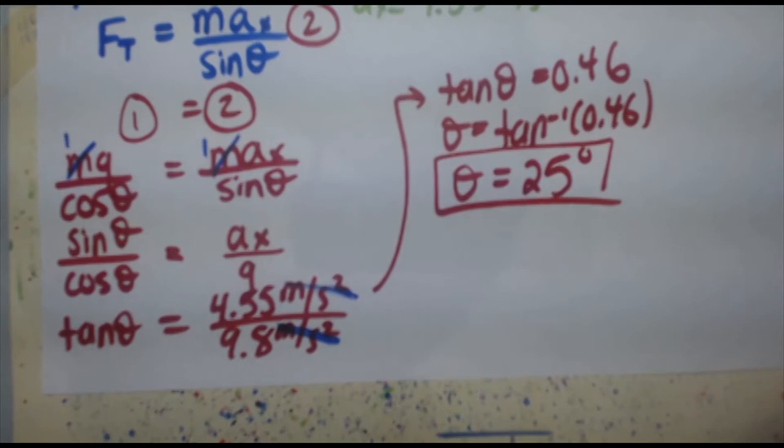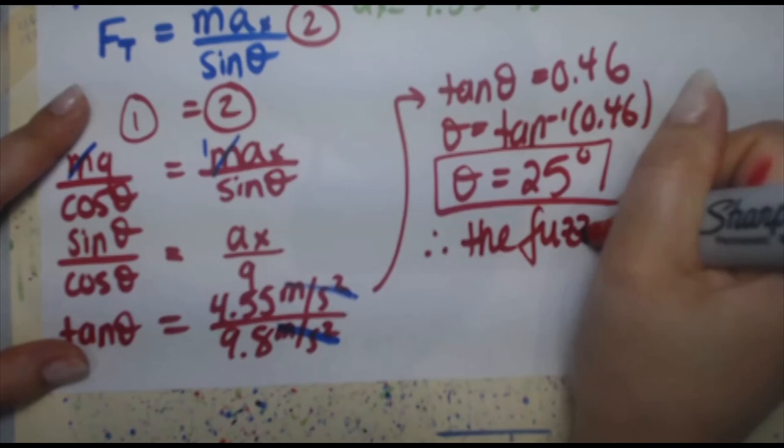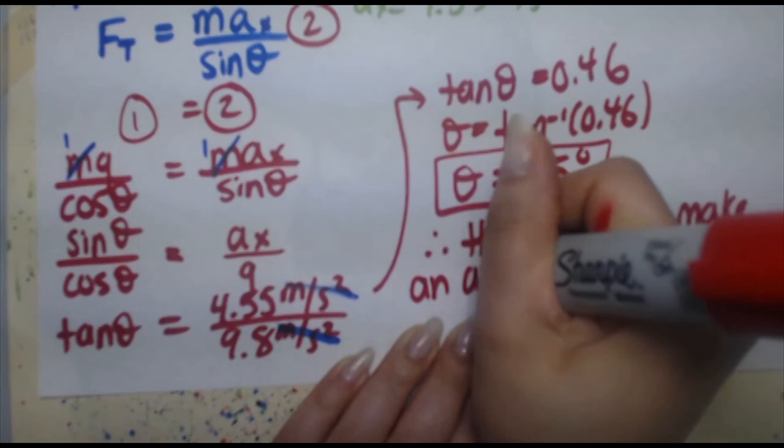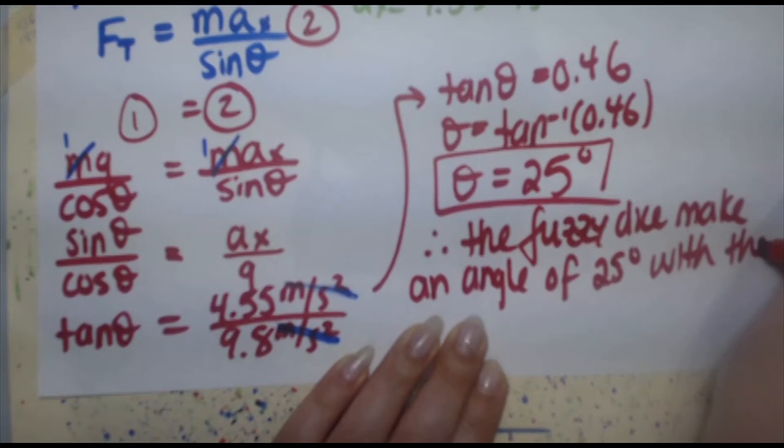And that is correct to the right number of sig figs. Therefore, the fuzzy dice make an angle of 25 degrees with the vertical.